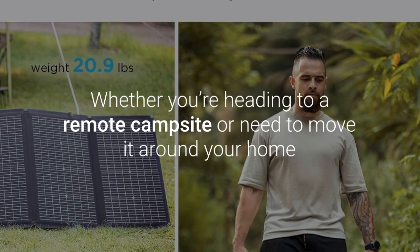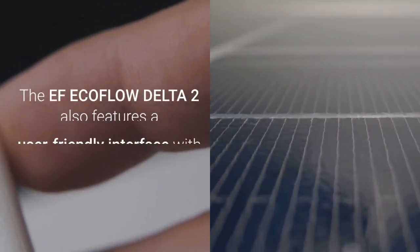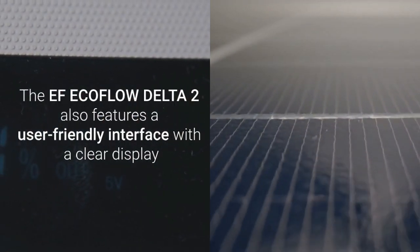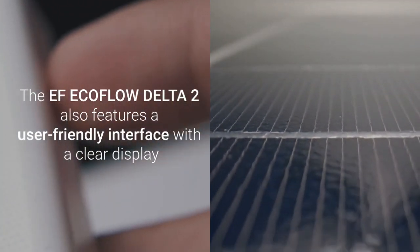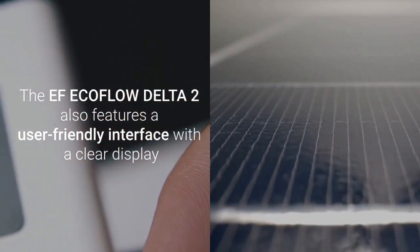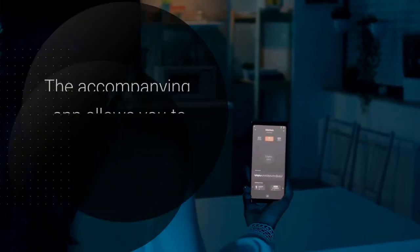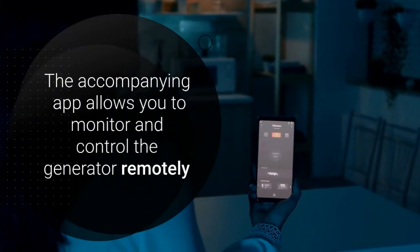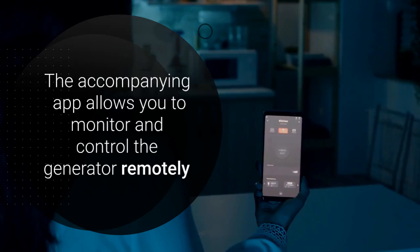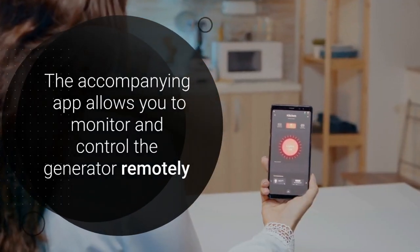The EF EcoFlow Delta II also features a user-friendly interface with a clear display that shows all the essential information. The accompanying app allows you to monitor and control the generator remotely, adding an extra layer of convenience and control.